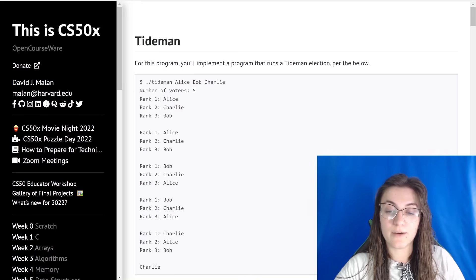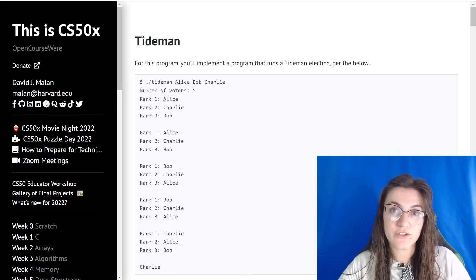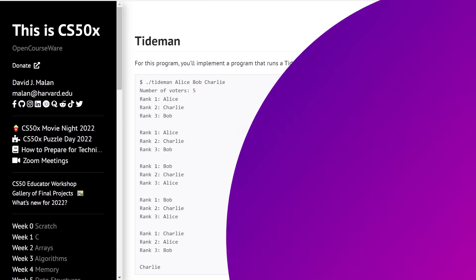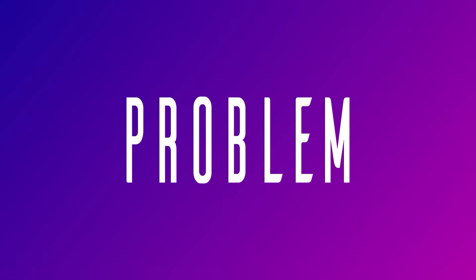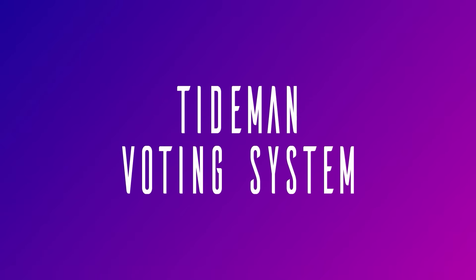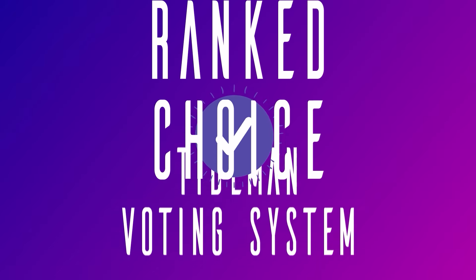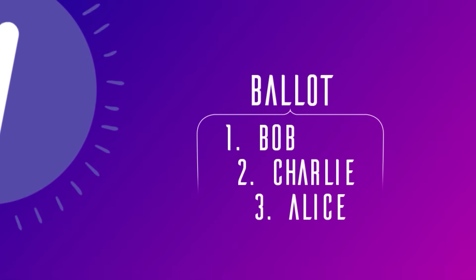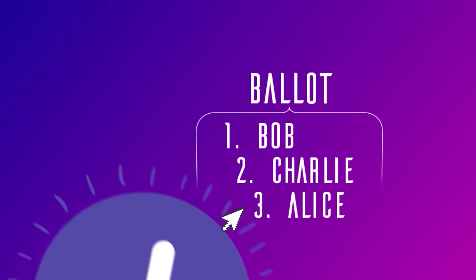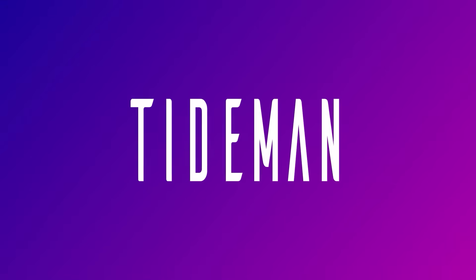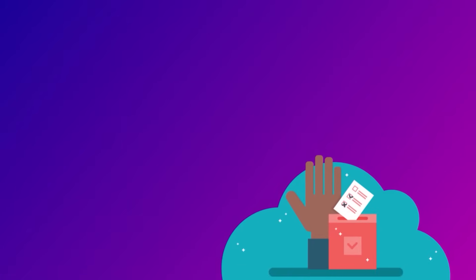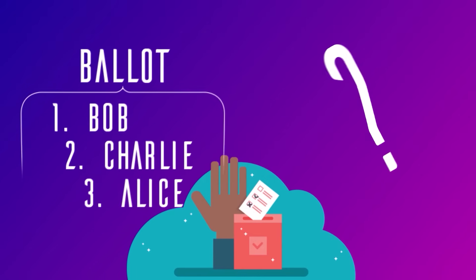Here we're going to take a look at an election and declare who is the winner. But there are some things that are different. In this problem we're going to work with the Tideman voting system, which is a kind of ranked choice voting, like in runoff. Voters can vote for more than one candidate and rank them in order of preference. The difference is that in Tideman we look at every possible pair of candidates and determine who would have won if the election was just between those two.